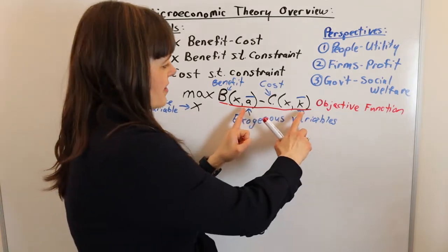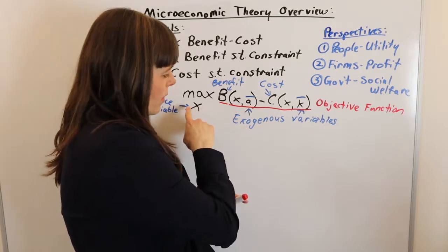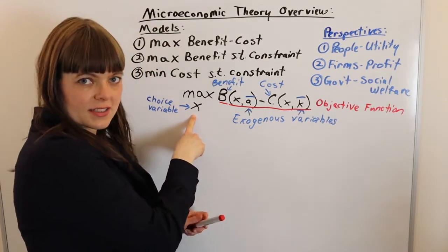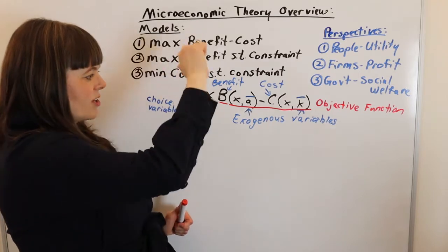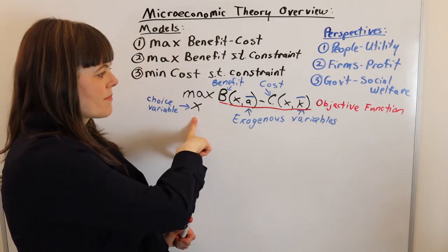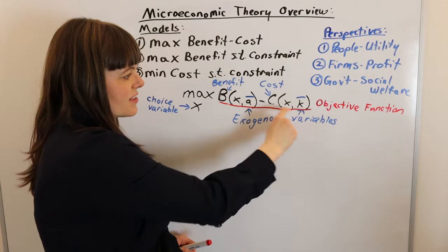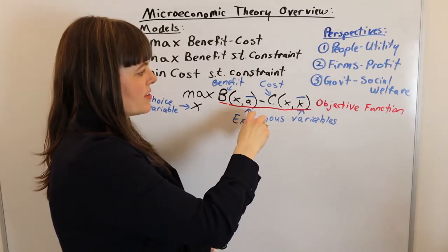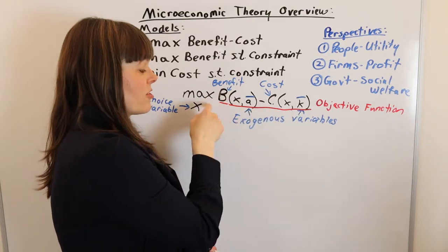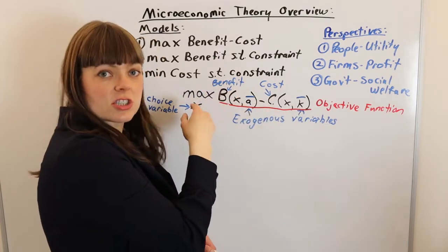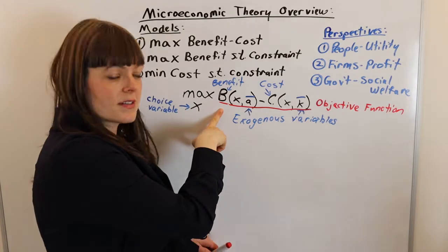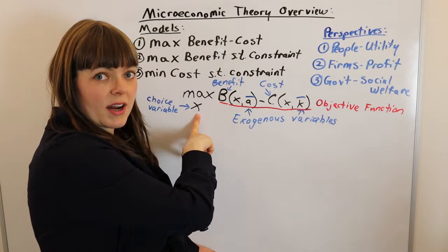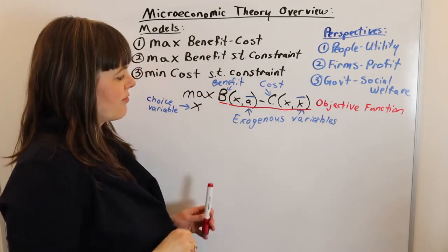Then we've got our exogenous variables. When we change our choice variable—and we know if we're going to do these thought experiments we're going to be increasing and decreasing our choice variable—these exogenous variables are not going to change in response to that. They come in from the outside and they'll influence the relationship between the choice variable and the benefit, but they definitely will not respond directly when we increase and decrease our choice variable.